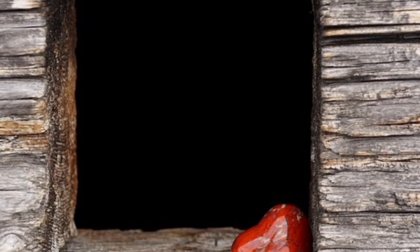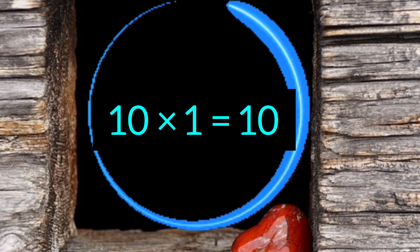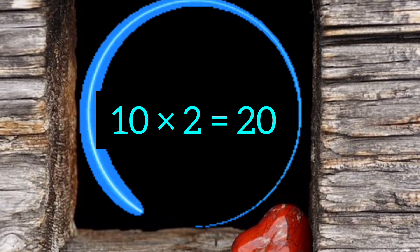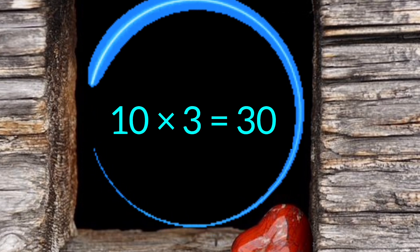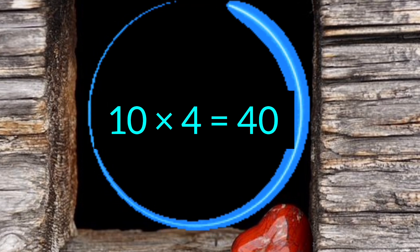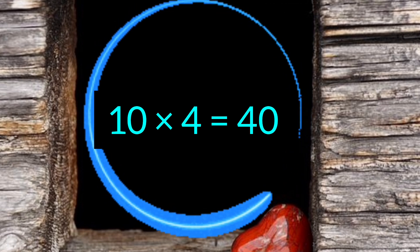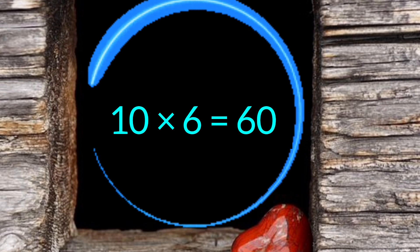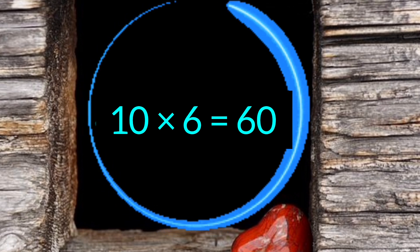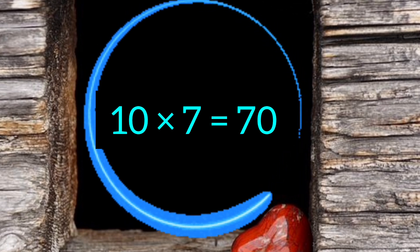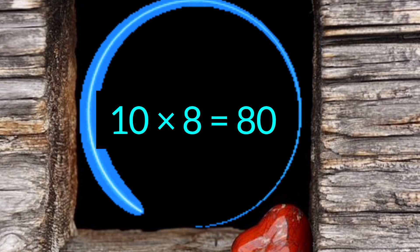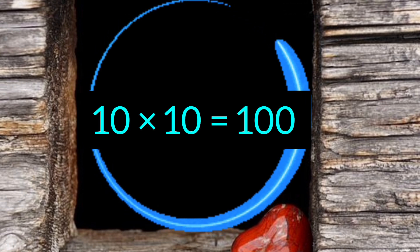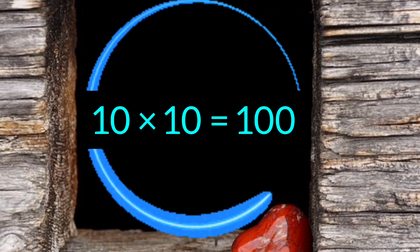Let's see once again. Ten ones are 10. Ten twos are 20. Ten threes are 30. Ten fours are 40. Ten fives are 50. Ten sixes are 60. Ten sevens are 70. Ten eights are 80. Ten nines are 90. Ten tens are 100.